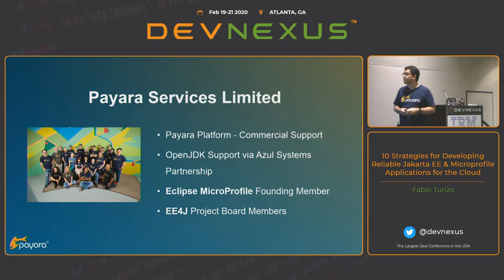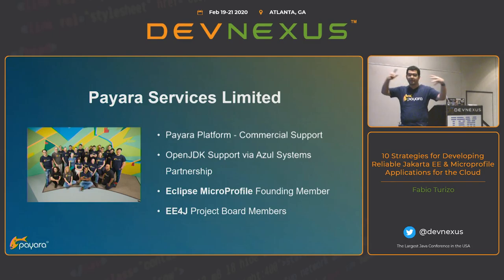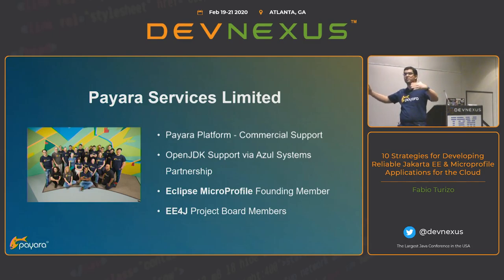We are an Eclipse MicroProfile founding member. When the project was just starting, we were there contributing not only code but also ideas on what all the APIs could do. We're also project board members of the Enterprise Edition for Java — a rebranding of the governing body that took the Java specification forward to the community — now known as Jakarta EE.